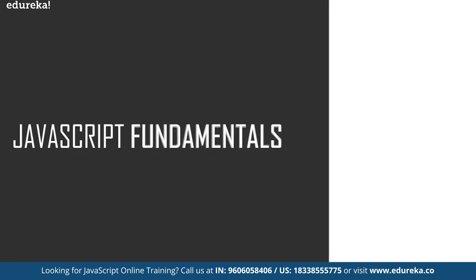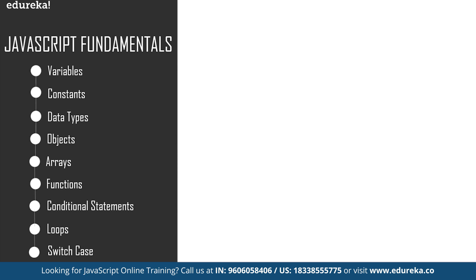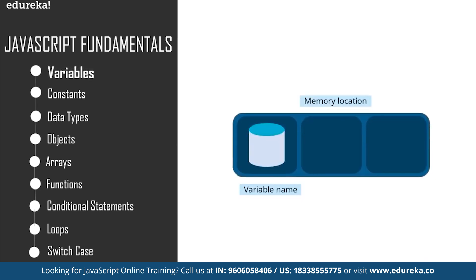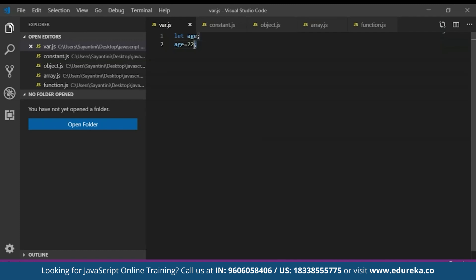Now let's cover some of the basic fundamentals of JavaScript: variables, constants, data types, objects, arrays, functions, conditional statements, loops, and switch case. A variable is basically a name given to a memory location which acts as a container for storing data temporarily — reserved memory locations to store values. To declare a variable in JavaScript, we use the let keyword. For example, you write 'let age;' followed by a semicolon, and then you can provide a particular value for this variable.